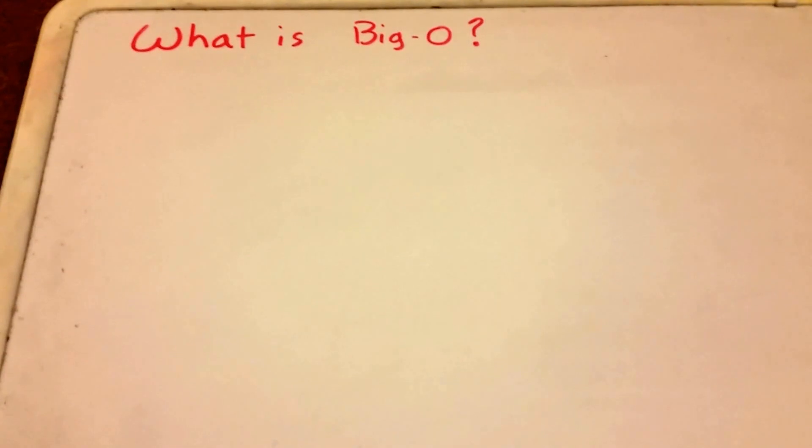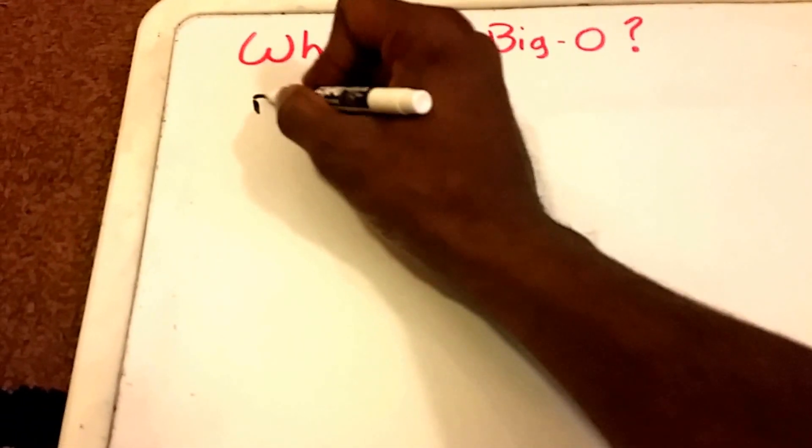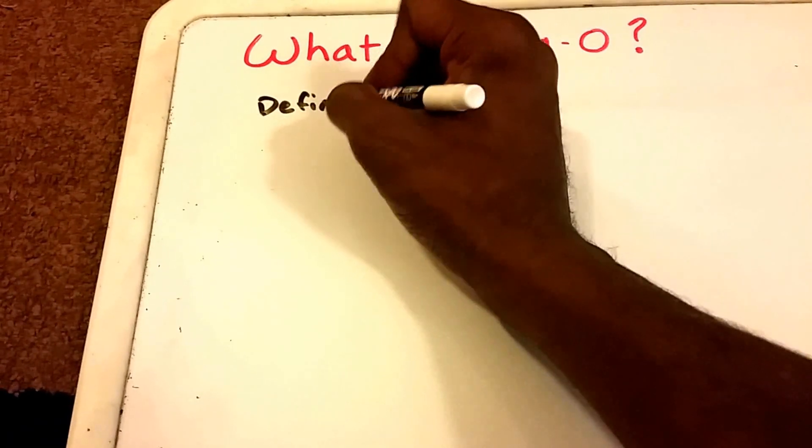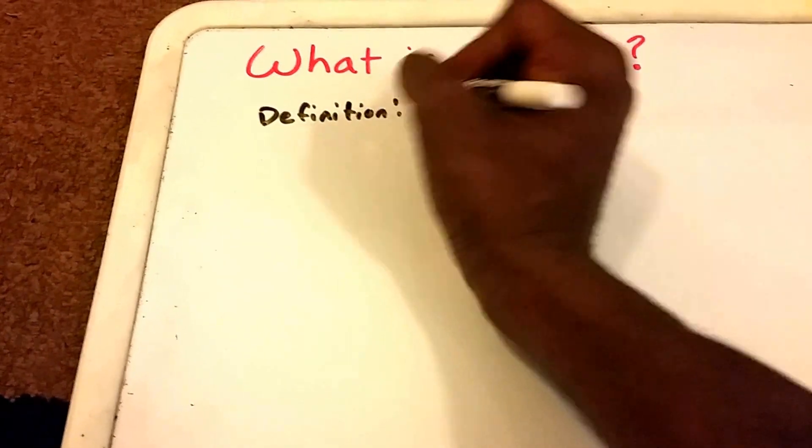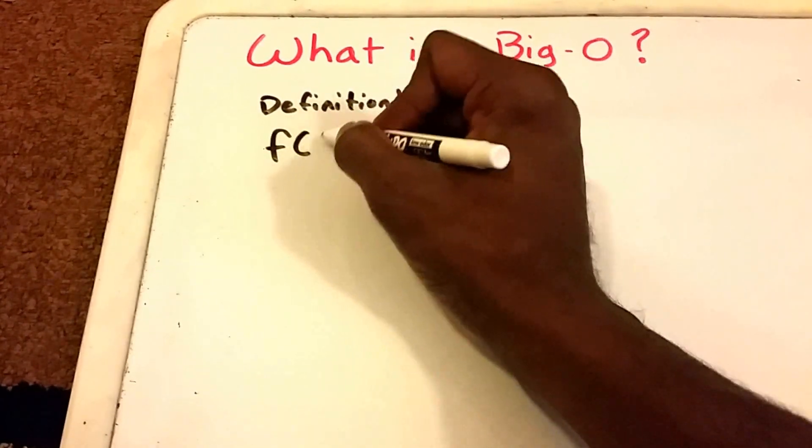Hey guys and welcome to this video on what is Big-O. So let's start off with the definition of Big-O. Here we're going to put definition, and the definition says that a function which we'll call f of X is Big-O of another function we'll call G of X if and only if...